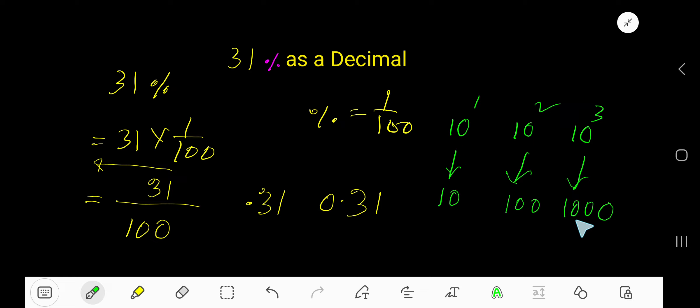10, 100, 1000. These are called powers of 10. So to divide a whole number by a power of 10, just count the number of zeros.